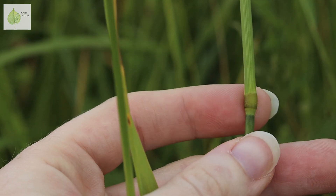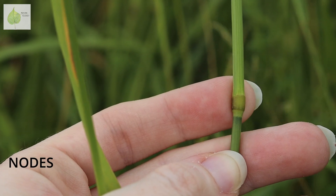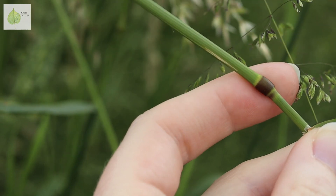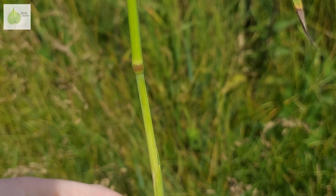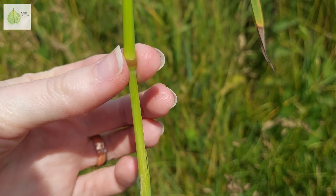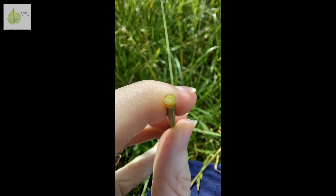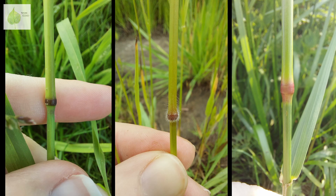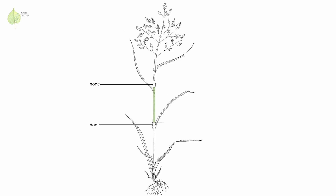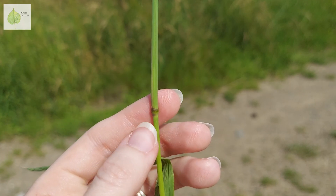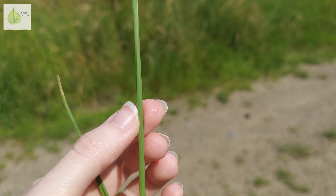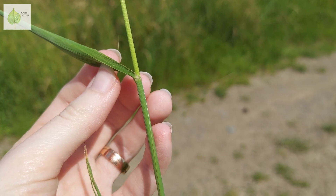Going up the stem, you come across multiple thickened areas — those are nodes. They look like joints and might even be referred to as knees. They're pretty easy to spot, but if you're in doubt, just run your fingers along the culm and feel for the thickened, swollen areas. Nodes, as opposed to the rest of the culm, are solid, not hollow. Node features such as color or whether they're hairy are also often used for identification. The sections of a stem between the nodes are called internodes. Nodes are the places from which the leaves emerge.